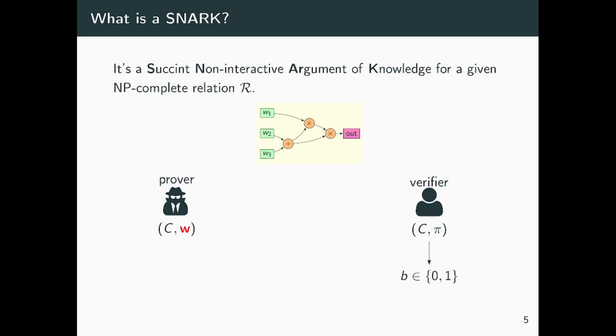The main properties we want a SNARK to satisfy are completeness and soundness. Completeness means that if the prover knows a witness for the circuit, the verifier must always accept. And if the circuit is not satisfiable, the verifier should always, or at least almost always, reject.